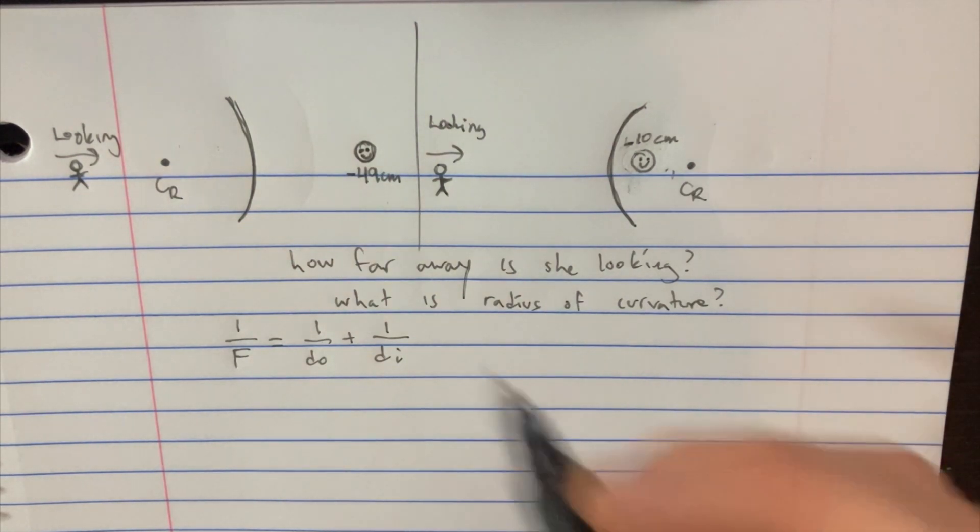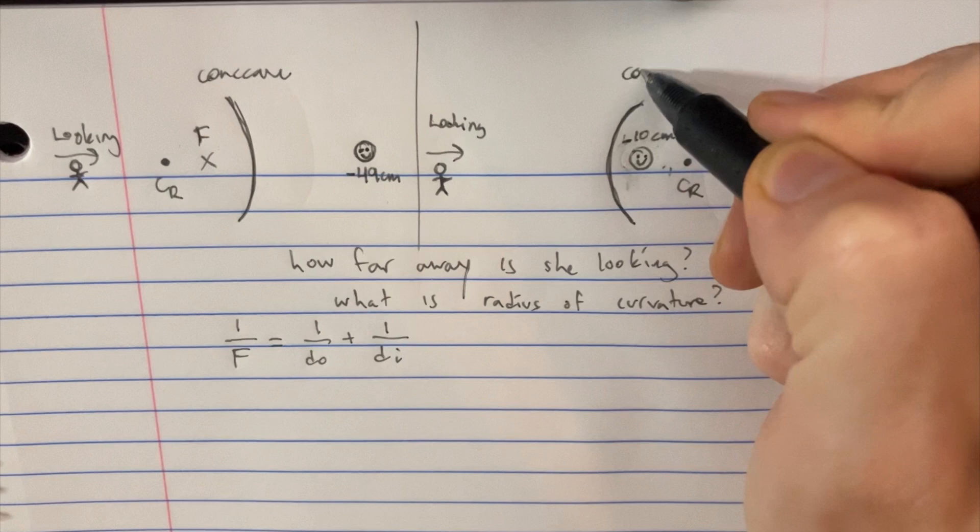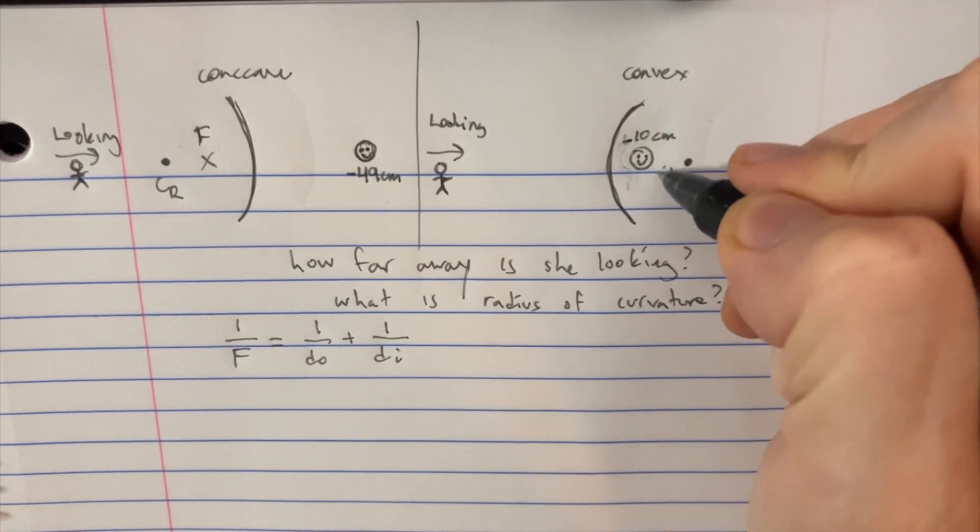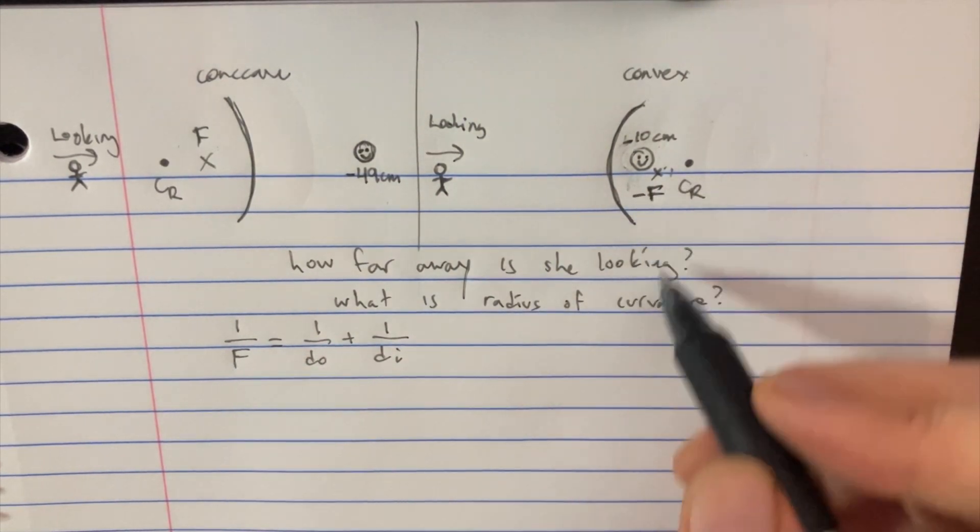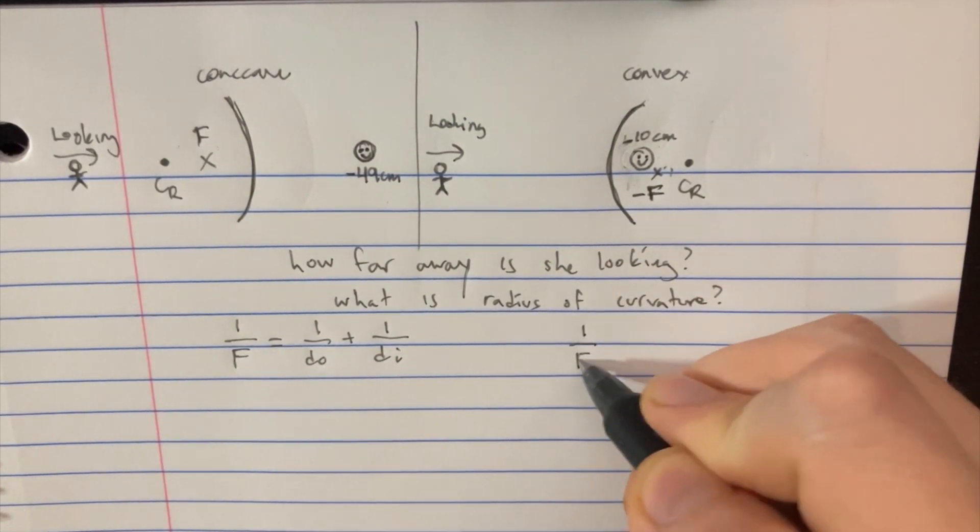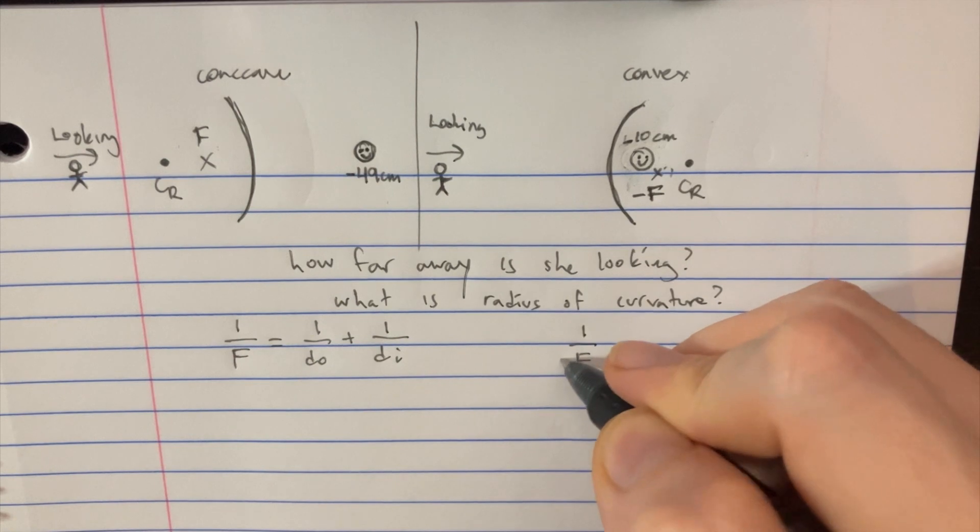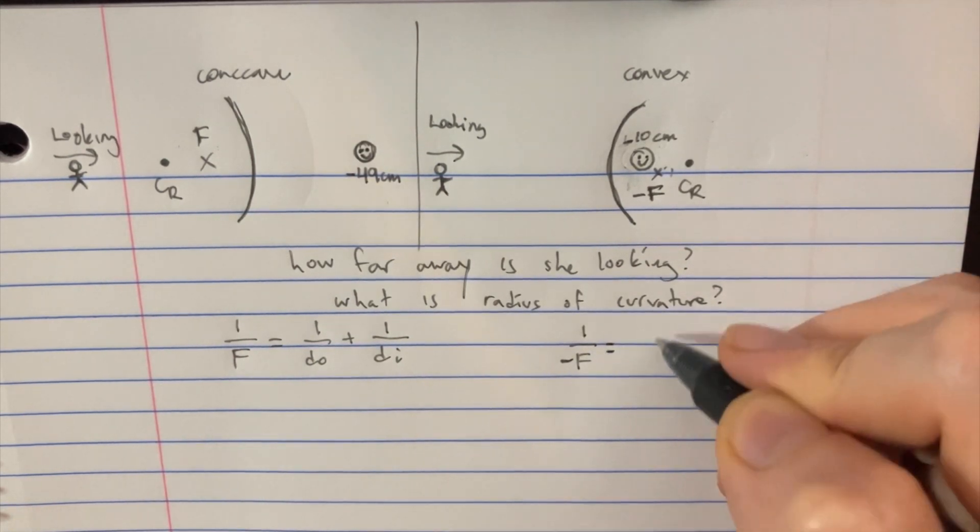From there, we should remember that when we're looking at a concave mirror, the focal point is positive. But when we're looking at the convex version, then the focal point here is actually negative. So when we set up this equation for this side, 1 over F, this is technically supposed to be negative F. So let's just keep track of that.